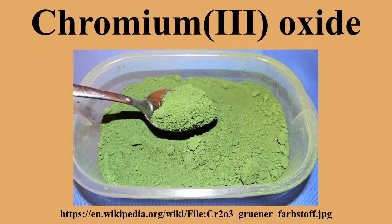When heated with finely divided aluminium, it is reduced to chromium metal and aluminium oxide: Cr2O3 + 2Al → 2Cr + Al2O3. Unlike the classic thermite reaction involving iron oxides, the chromium oxide thermite creates few sparks, no smoke or sound, but glows brightly. Because of the very high melting point of chromium, chromium thermite casting is impractical. Heating with chlorine and carbon yields chromium chloride and carbon monoxide: Cr2O3 + 3Cl2 + 3C → 2CrCl3 + 3CO. Other chromates can be formed by the oxidation of chromium oxide in a basic environment.